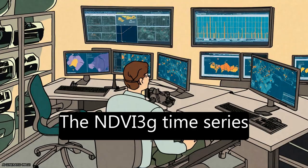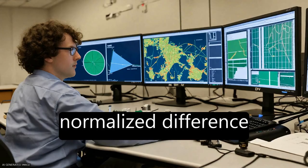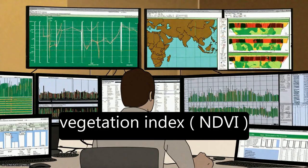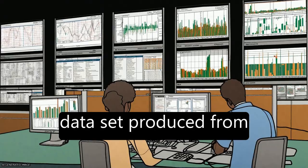The NDVI 3G time series is an improved 8 km normalized difference vegetation index NDVI dataset produced from advanced very high resolution radiometer AVHRR instruments.